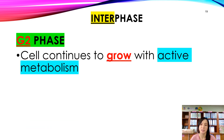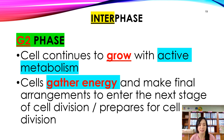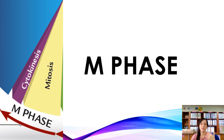During G2 phase, the cell continues to grow with active metabolism. The cell gathers energy because cell division requires energy. During G2 phase, the cell gathers energy and makes the final preparations to enter the next stage of cell division. After finishing interphase, the cell will enter M-phase.